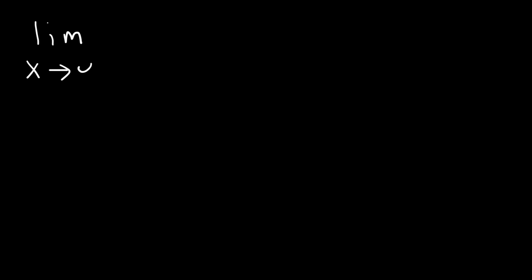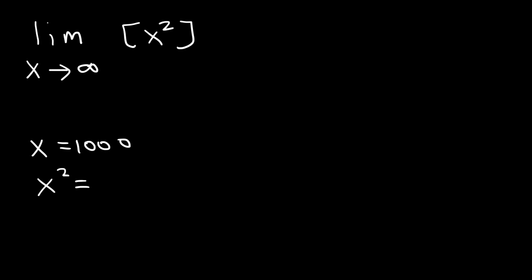In this lesson, we're going to talk about how to find a limit at infinity. So what is the limit as x approaches infinity for the function x squared? If x became very large, what would x squared become? If x was 1,000, x squared would be 1 million. So as x gets very large, this turns into infinity as well — it becomes even larger, and a large number is still infinity.